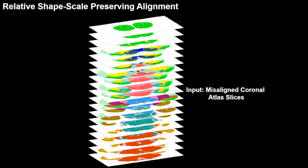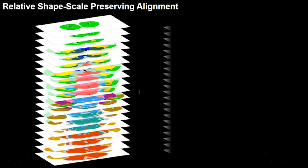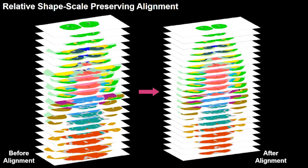To perform surface reconstruction of the mouse brain, we first align all the annotated atlas slices while preserving the relative shape and scale of individual regions both within and between slices.